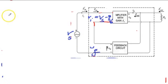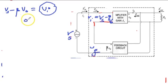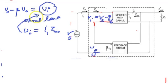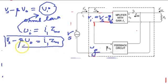So Vi is the input signal given to the amplifier. It equals Vs minus beta V0. If we write Ohm's law, voltage equals current into impedance. Current is I1, impedance is Zin. Zin is the impedance without feedback. Substituting the value of Vi in the above expression, it becomes Vs minus beta V0 equals I1 into Zin.